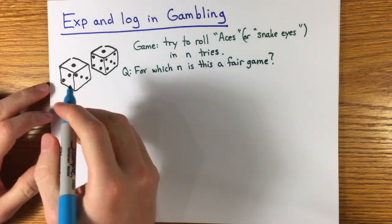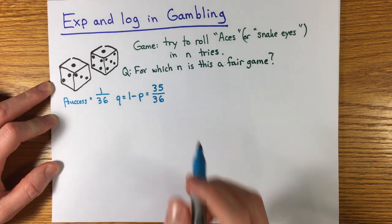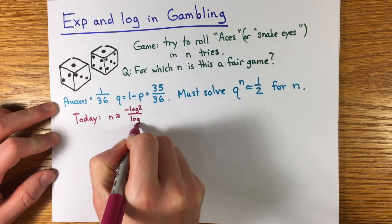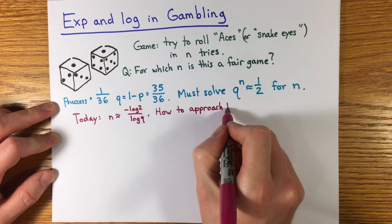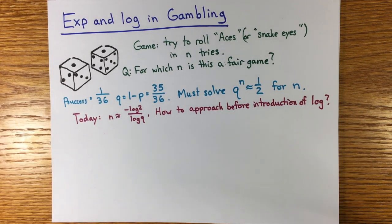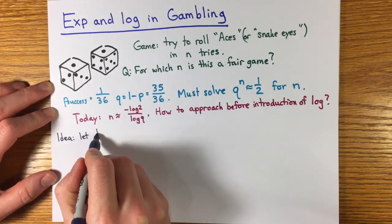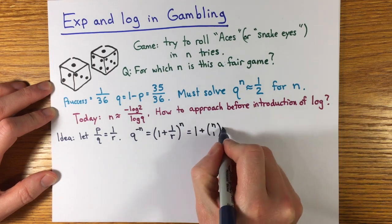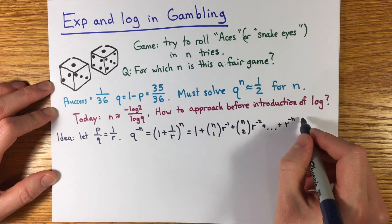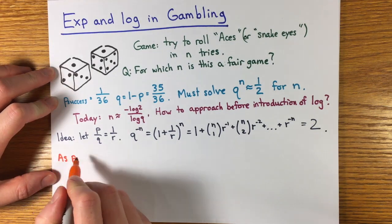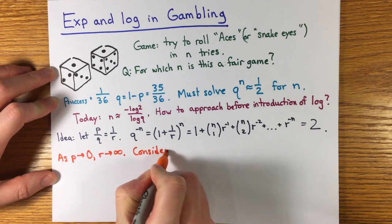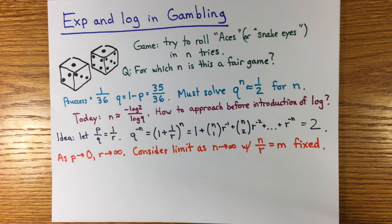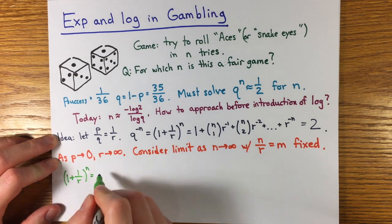If p is the chance of rolling two ones, 1 in 36, and the chance of failure is q equals 1 minus p equals 35 over 36, then people realize that the fair number of tries n was when q to the n equals 1 half, or as close to it as one could get with a whole number n. Today, we throw into a calculator n equals minus log 2 over log q, but they didn't have calculators or logs yet. People did compute tables and use some laws of exponents to approximate the right number of tries. Here the thrower has the advantage for the first time at 25 tries. Here's a way to approximate the right number more easily. Set p over q equals 1 over r, so the equation we have to solve is q to the minus n, which is 1 plus 1 over r to the n, equals 2.